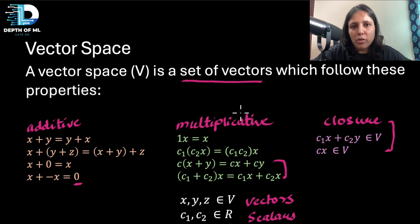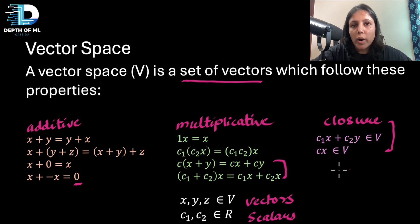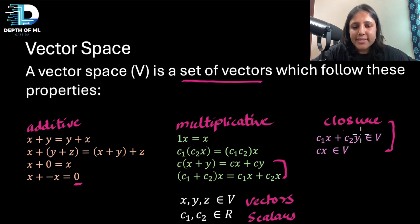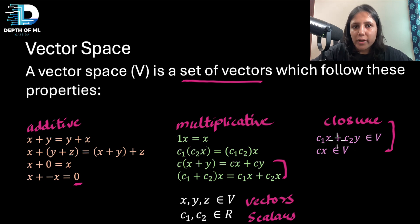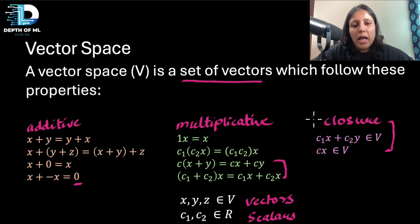A subspace, being a subset of a vector space, always inherits additivity and multiplicativity. The only thing that determines whether it's a valid subspace is the closure property. If X and Y belong to vector space V, any linear combination of those two vectors should also belong to V. Similarly, if X is in V, any scalar multiple of X should also be in V.